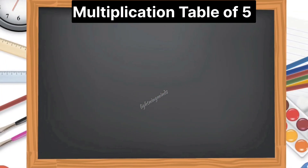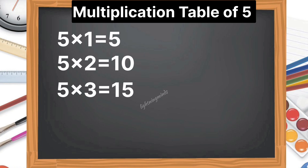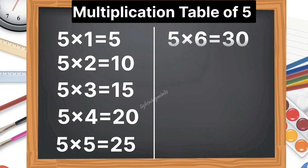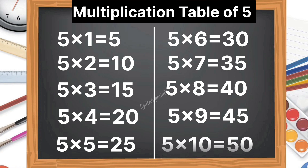Multiplication table of 5. 5 1s are 5, 5 2s are 15, 5 4s are 25, 5 5s are 25, 5 6s are 30, 5 7s are 35, 5 8s are 40, 5 9s are 45, 5 10s are 50.